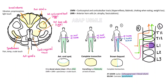Hello, this is ASAP USMLE, and today we're going to make spinal cord lesions make sense in just a few minutes. But first, we need to understand the cross-sectional anatomy of the spinal cord. Assuming you're familiar with the functions of the tracts, we will mainly focus on their location.